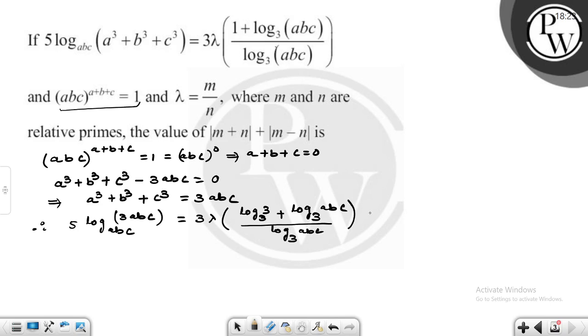Using the property of logarithms, log base abc of 3abc equals (log₃(3abc))/(log₃(abc)). This simplifies the expression.